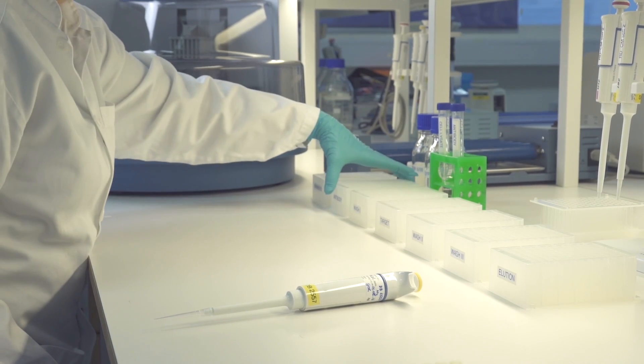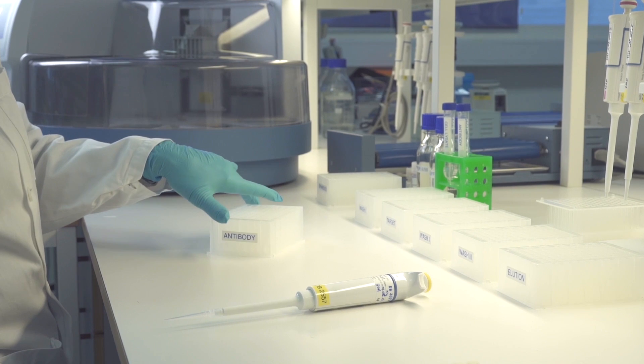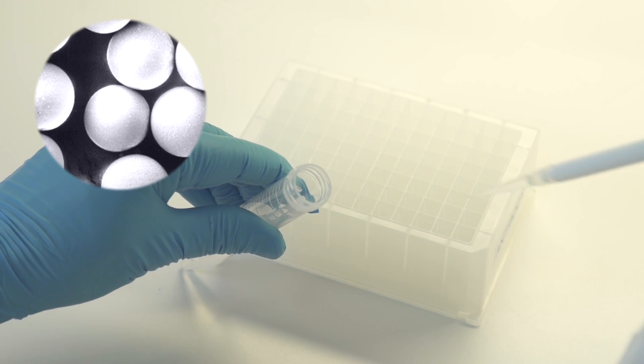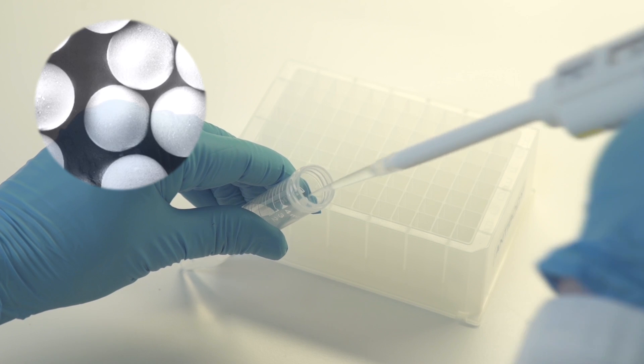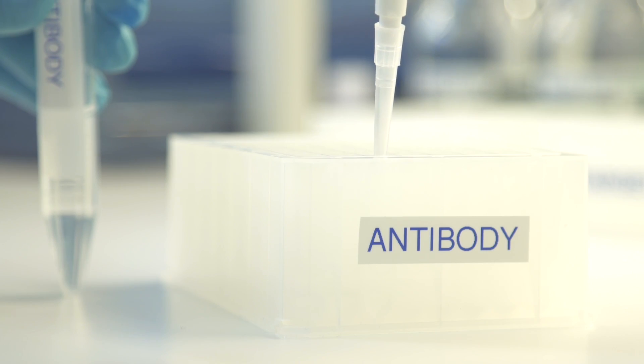The second plate is loaded with antibodies for target capture. Due to the smooth surface of the beads, the antibody consumption is very low, thereby minimizing cost while exploiting the full capture potential of the antibody. Typically, less than 10 micrograms of antibodies are used per 50 microliters of DynaBeads for each sample.